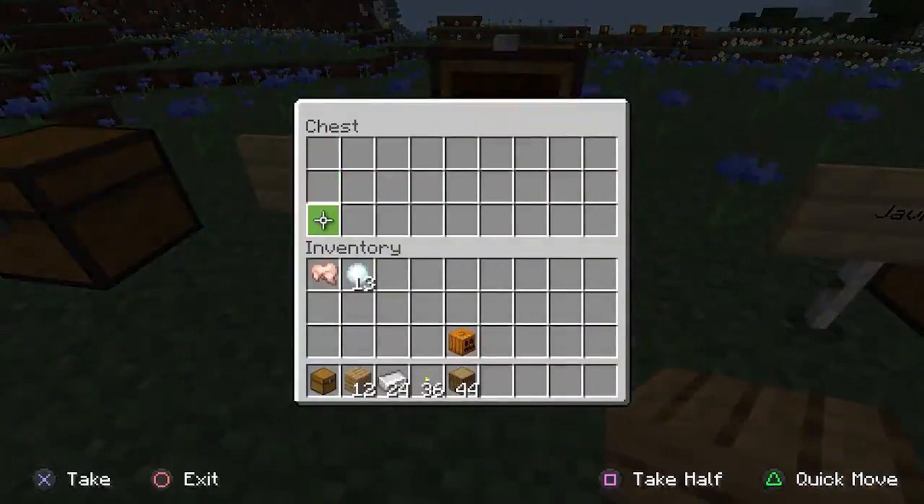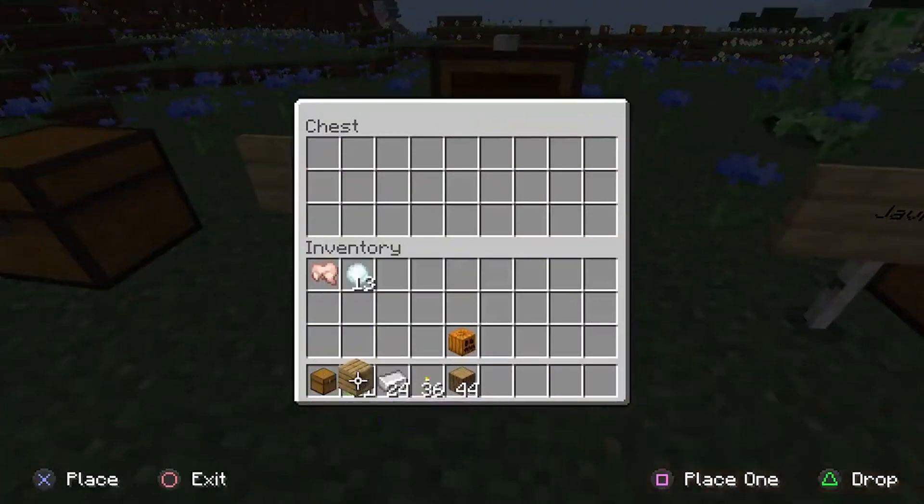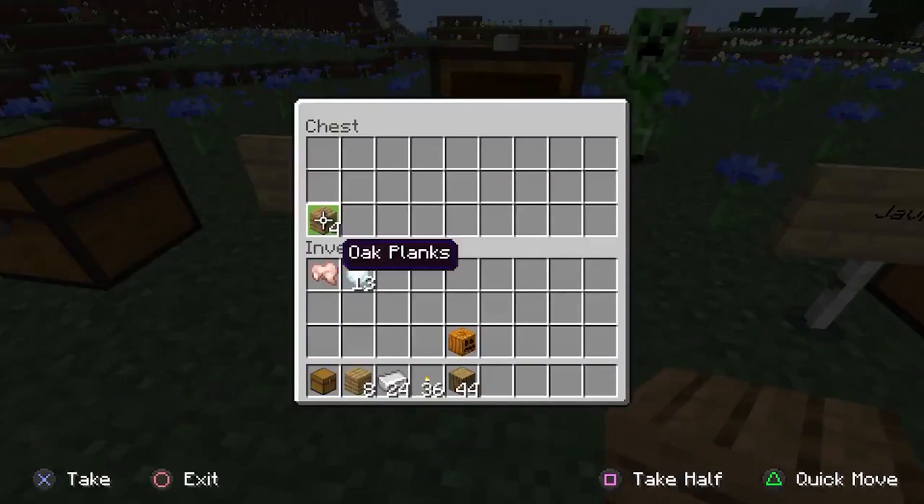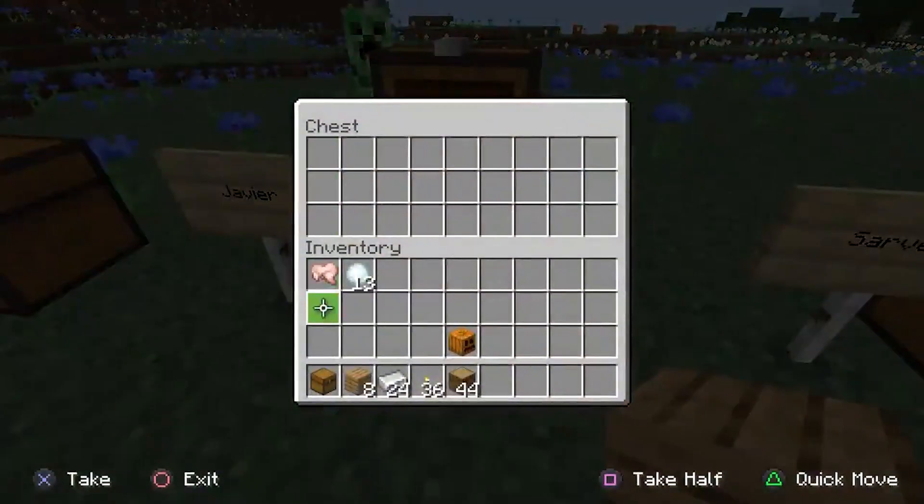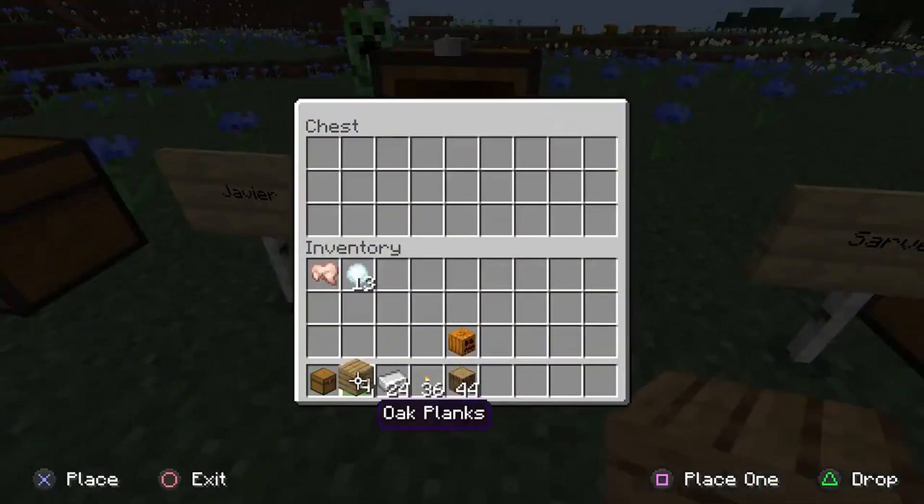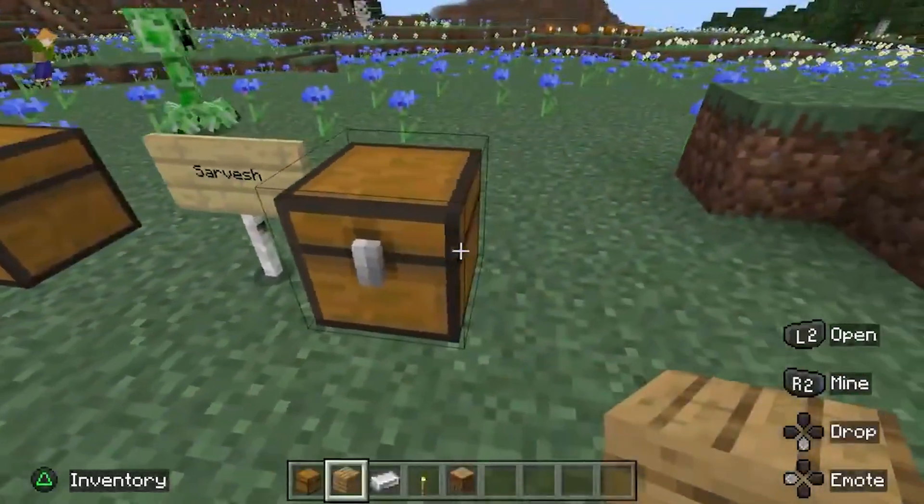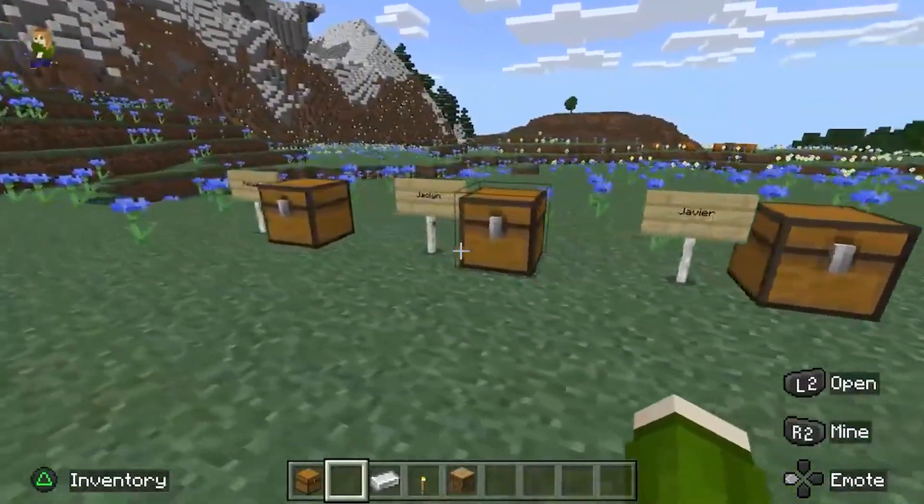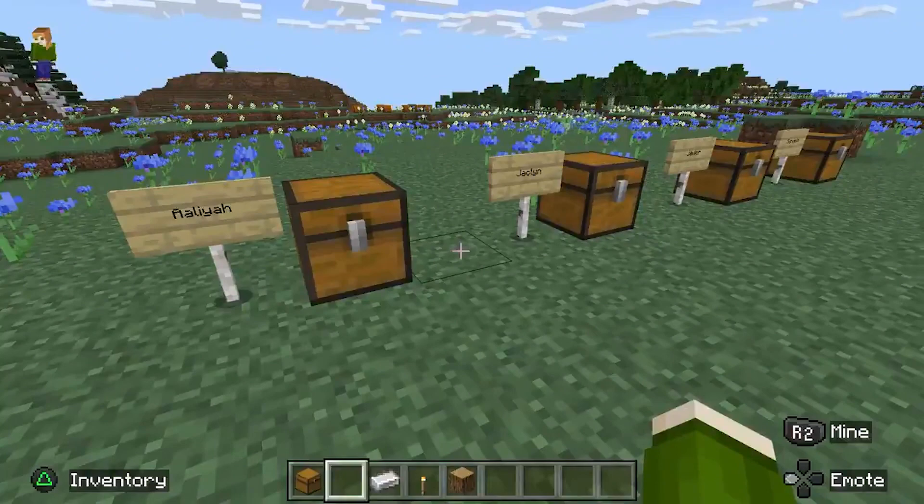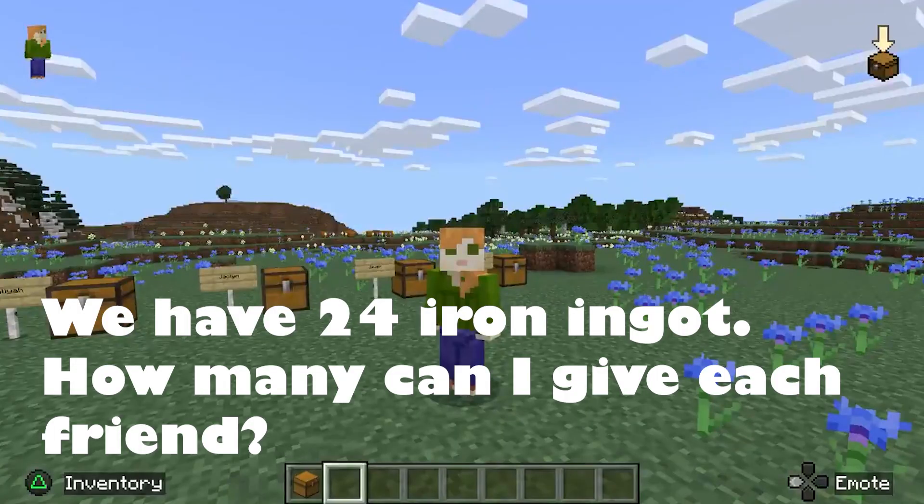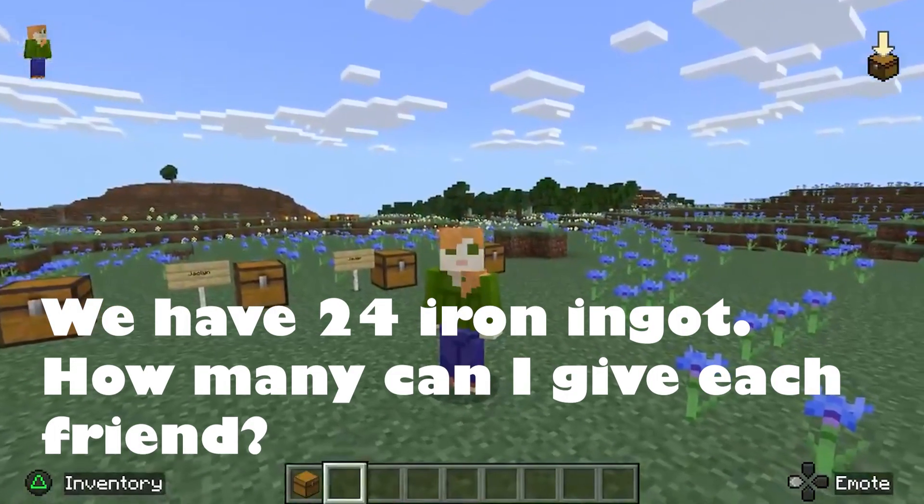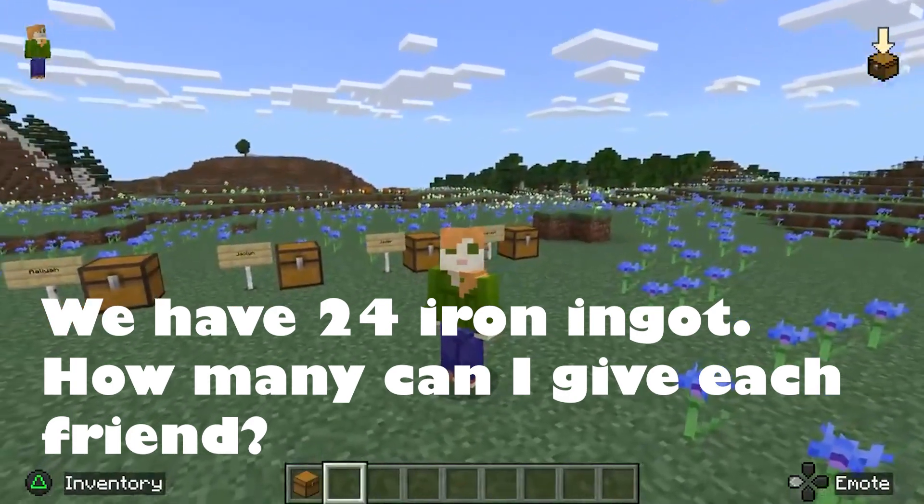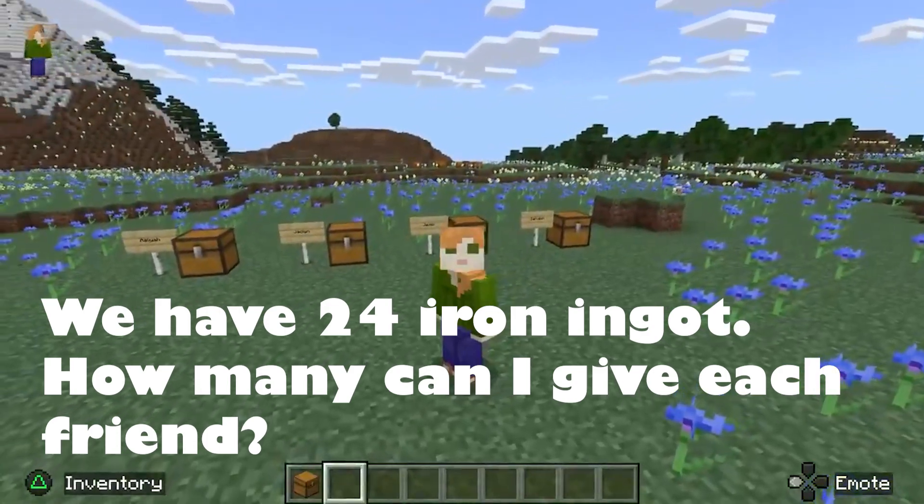All right. So now that we've solved that problem, I can give each of my friends four oak planks. All right, let's head back into Minecraft for the next problem. All right, I think you're getting the hang of this. Let's try this next one.